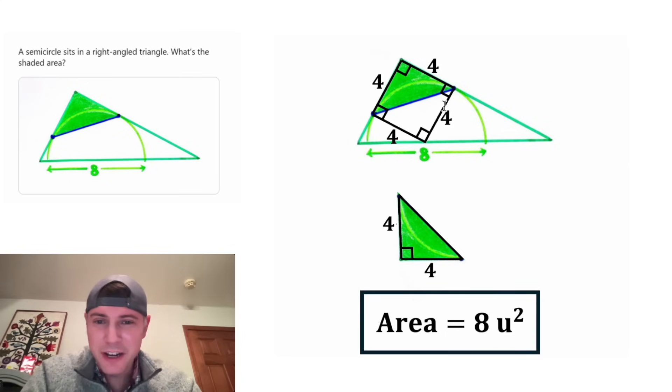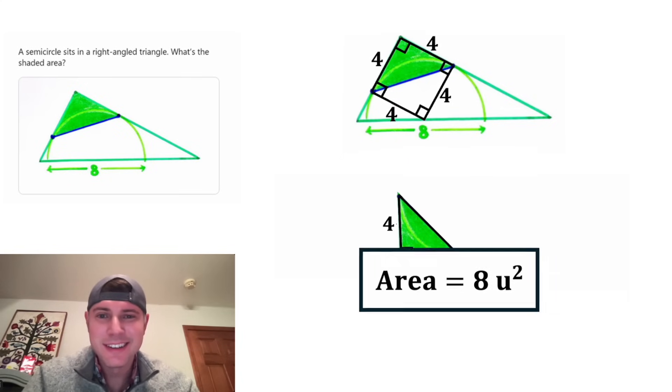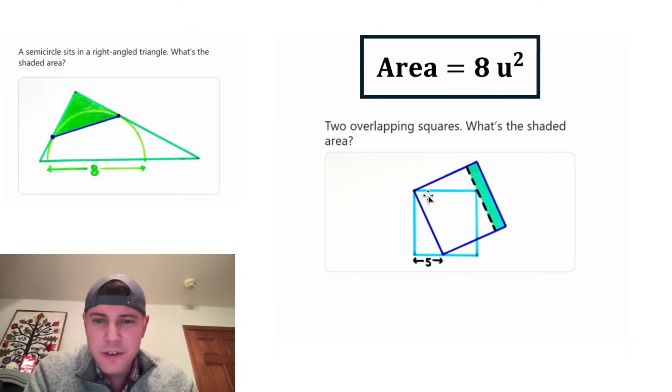How exciting. This one had a really clean solution, didn't it? Here's the next problem. We're given two overlapping squares and need to find the shaded area. We're also given this distance is 5. This looks like it could be a fun one.